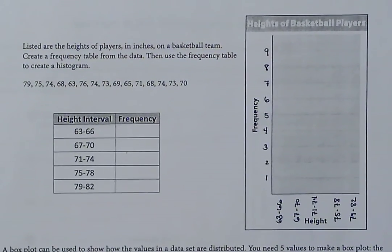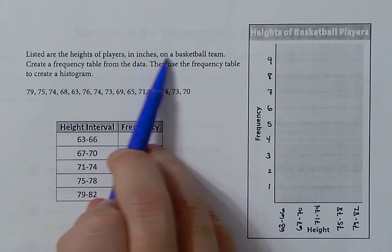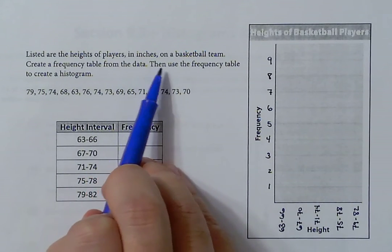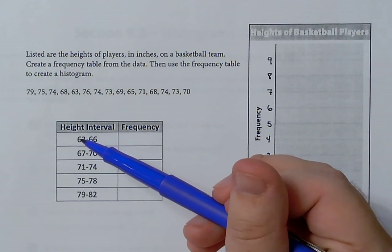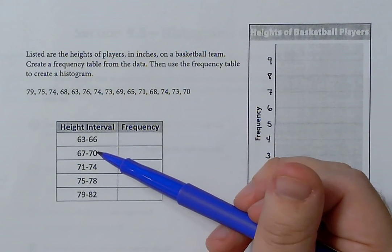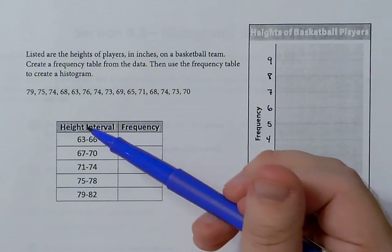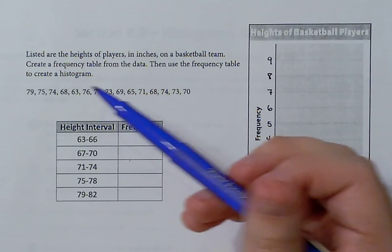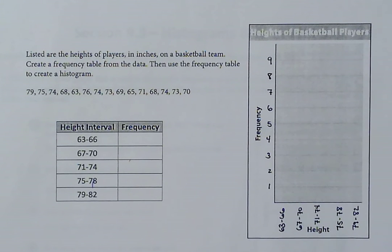For example 1B, listed are the heights of players in inches on a basketball team. We need to create a frequency table from the data and then use it to make a histogram. The intervals go from 63 to 82 in units of 4: 63 to 66, 67 to 70, 71 to 74, 75 to 78, and 79 to 82. We need to determine how many times numbers occur in each of these intervals.